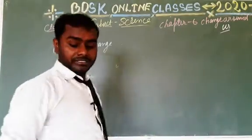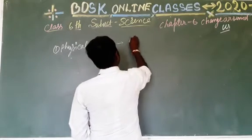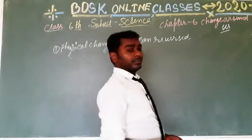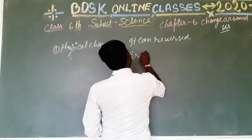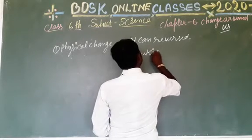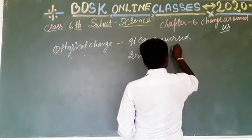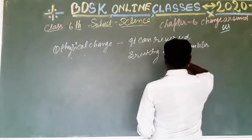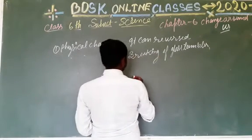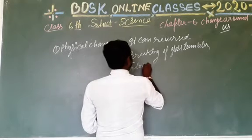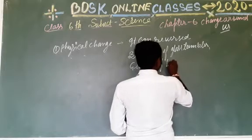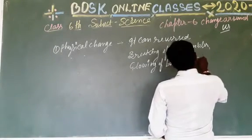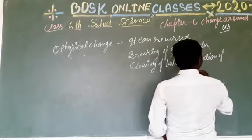Physical change examples: breaking of glass — it can get reversed. Blowing of a bulb, falling of leaves from trees — these are examples of physical change.